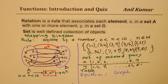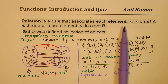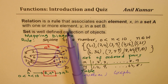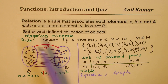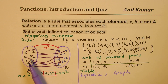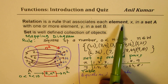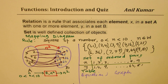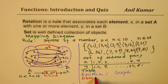To recap: a relation is a rule that associates each element in set A with one or more elements y in set B, and a set is a well-defined collection of objects. The input elements x and output elements y have special names — they are referred to as domain and range.